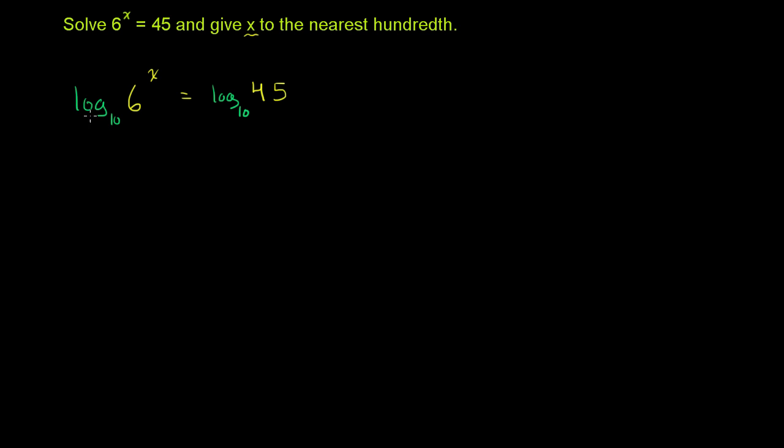Now, right over here, we know from our logarithm properties, if we have the logarithm of something to the x-th power, that's the same thing as x times the logarithm of that something, which was the 6 right over there. So you can move this out front, that exponent. And that's going to be equal to the logarithm base 10 of 45.